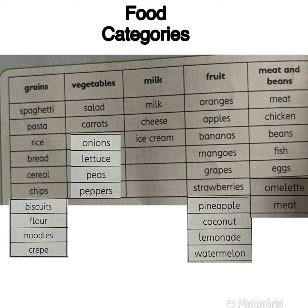Watermelon — tembikai. Buah oren, buah apple, buah pisang — banana tu pisang, mangoes — buah mango, grapes — anggur, strawberry, pineapple — buah nanas, coconut — buah kelapa, lemonade — buah lemon, watermelon — tembikai.